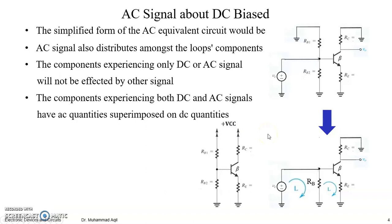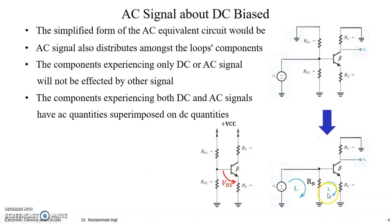For our desired amplifier, this was the DC equivalent circuit, and this is the AC equivalent circuit. We have computed the value of VBE from the DC circuit, and here we can find the value of VBE for the AC signal as well. This is a pure AC signal and this is a pure DC signal.